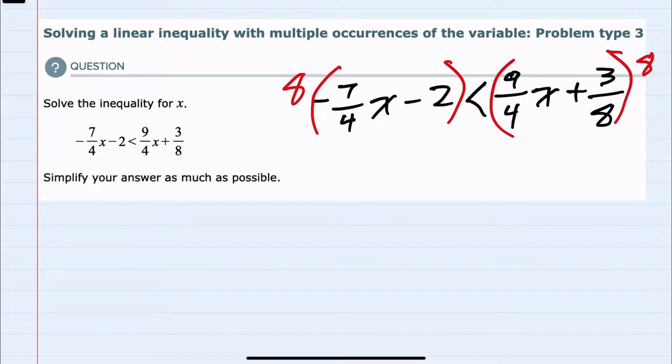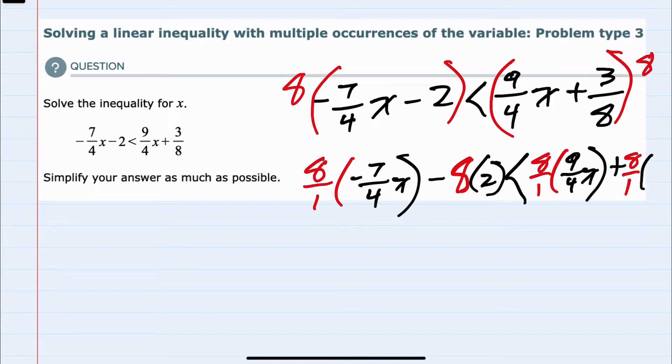To show what that would look like, I would need to distribute each of those 8s. So on the left, I would have 8 times negative 7 fourths x and also 8 times the 2. The inequality won't change because I'm multiplying by a positive. On the right-hand side, 8 times 9 fourths x plus 8 times 3 eighths.